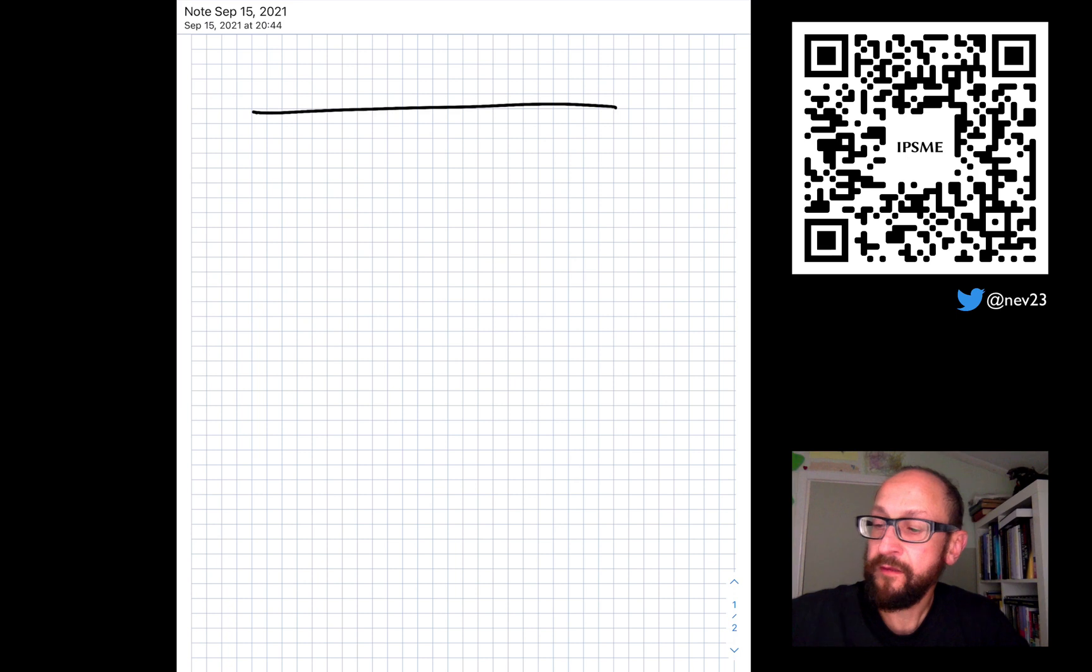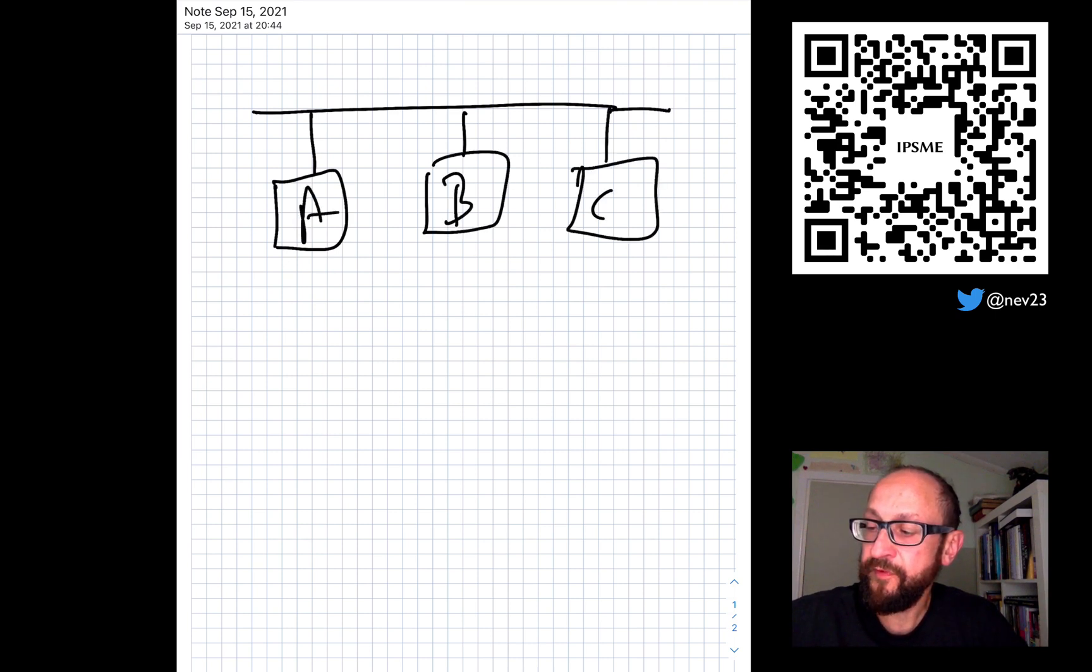So if we have one messaging environment and we have three processes on that messaging environment with three different representations, we could have a translation from A to B and we can have a translation from B to C.